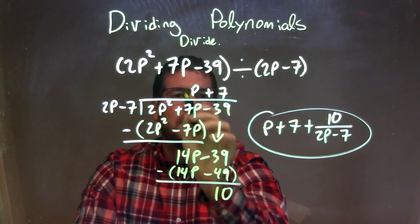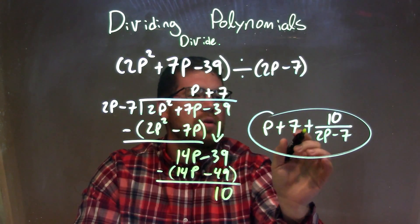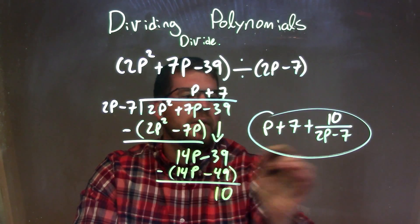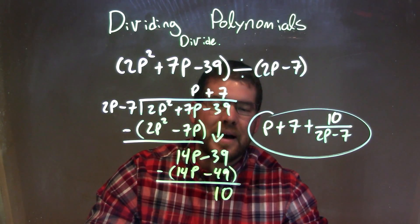So my final answer is just that p plus 7 that's up here, plus 10, my remainder, over my divisor 2p minus 7. Good luck.